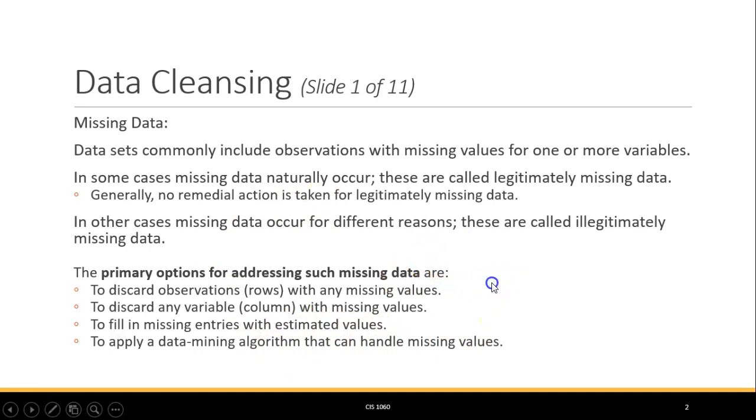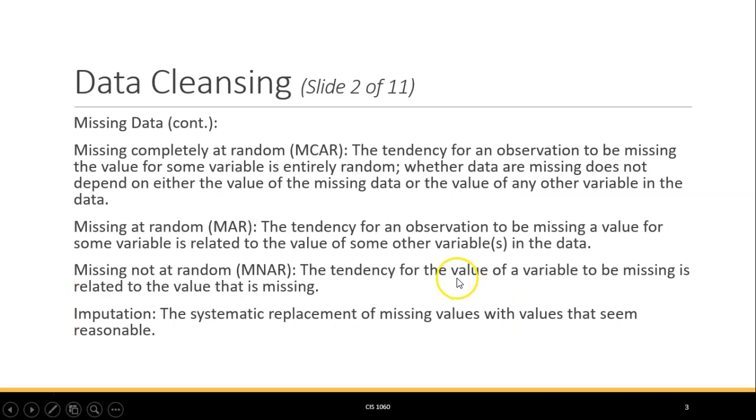There are various reasons why there are missing values, and it ranges in so many different ways. But what we're dealing with is that it could be completely at random, simply at random, or not random at all.